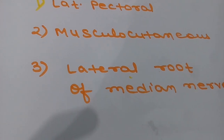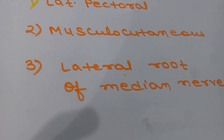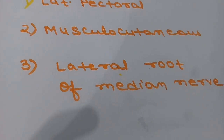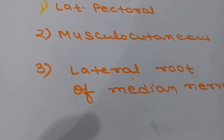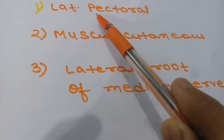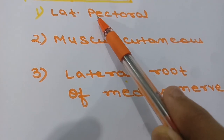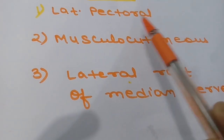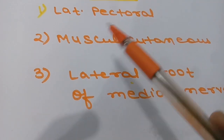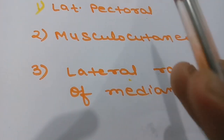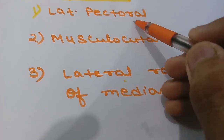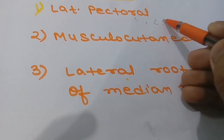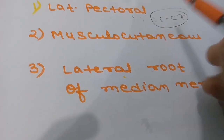When we discuss the medial cord, we will cover the medial root of the median nerve — here we are discussing the lateral root. Similarly, when we discuss the medial cord we will discuss the medial pectoral nerve, so you can correlate easily. The lateral pectoral nerve has a root value of C5 to C7.